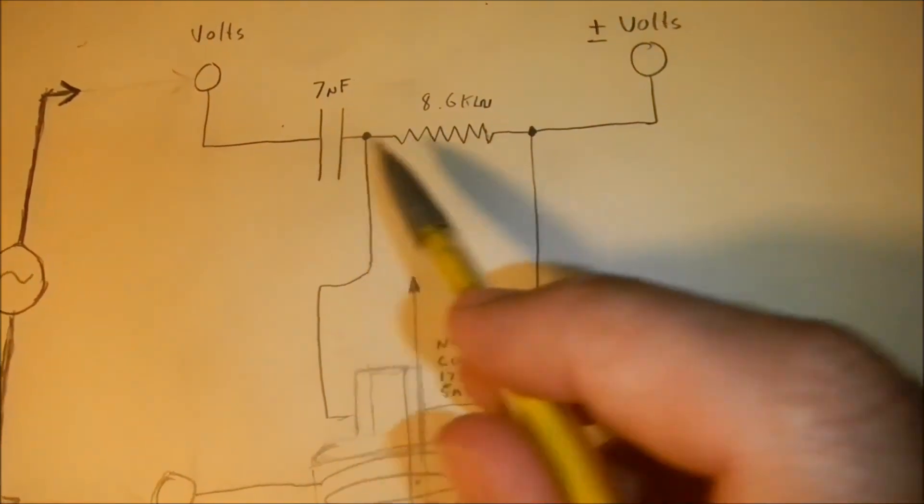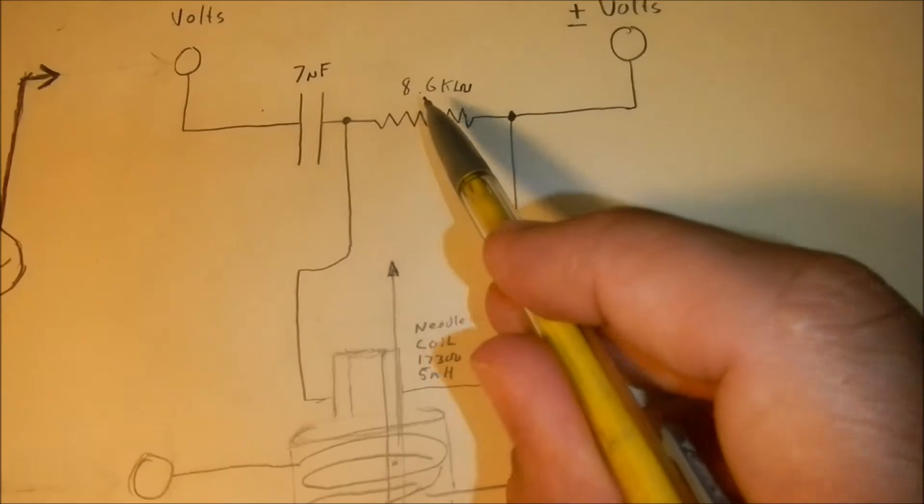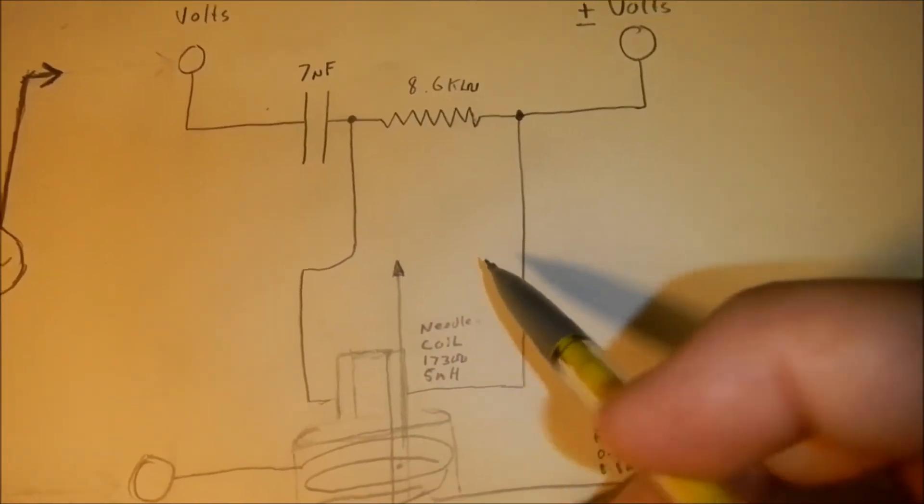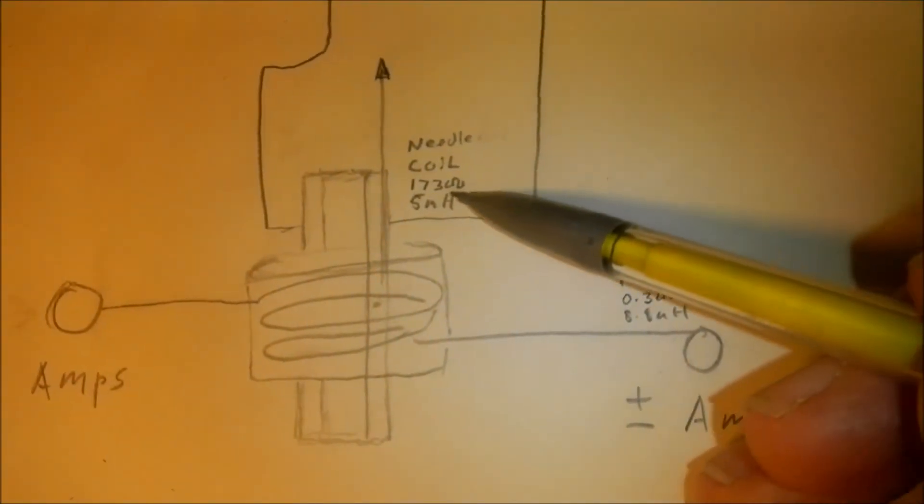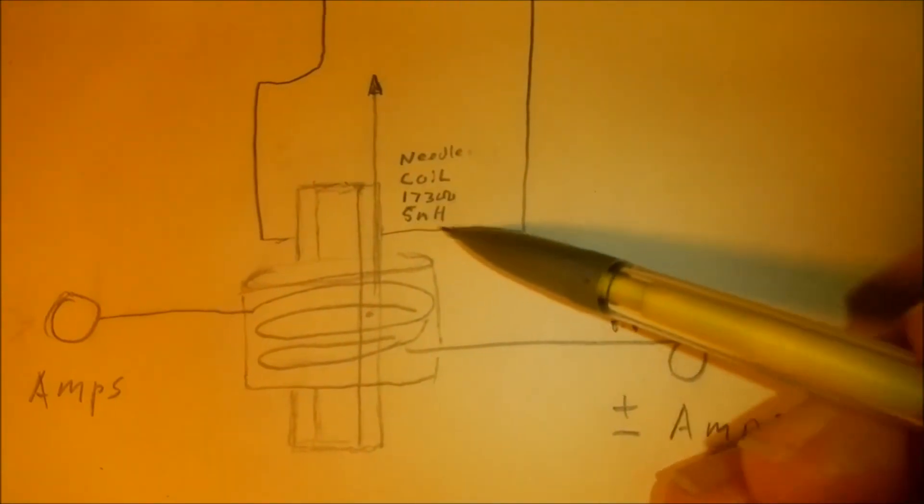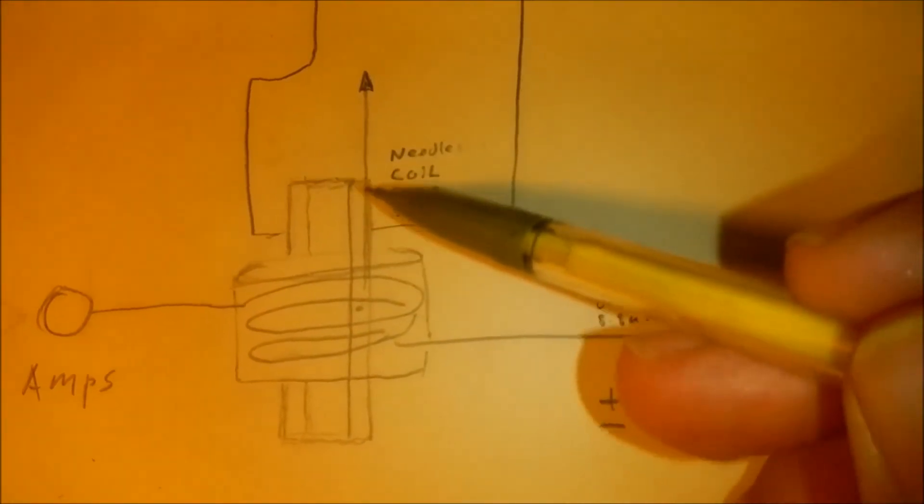But it does form a voltage divider with an 8.6 kilohm resistor. And the needle coil itself is 173 ohms and a 5 millihenry inductor.